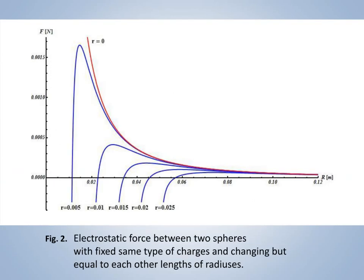On Figure 2, we have shown the graphics of the force F as a function of the distance R between the centers of the spheres with equal radiuses which assume successfully increasing values and different in value of fixed same type, positive or negative, of charges. The graphic in red is for point charges when R1 equals R2 equals 0, i.e. for Coulomb's Law. The graphics in blue from the top down are for spheres with increasing lengths of their radiuses.